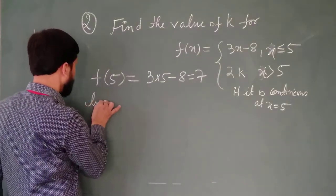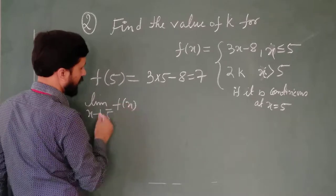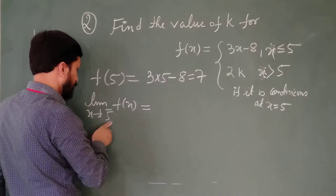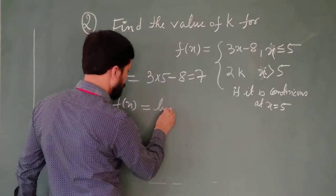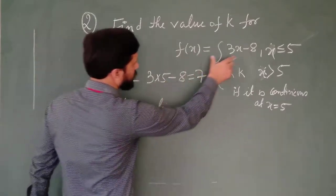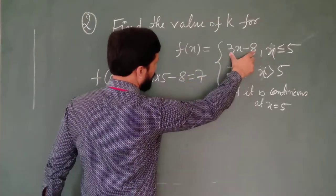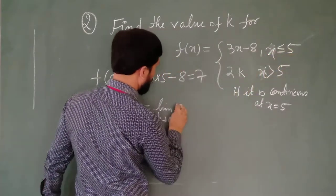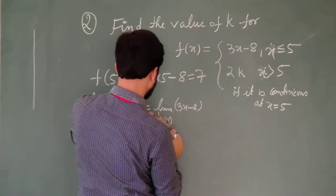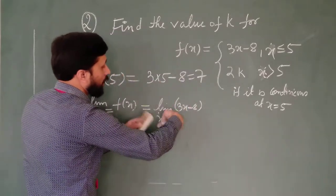Now find the left hand limit: limit x tends to 5 minus, that is the left hand limit of the function f(x). In the next step, we will replace this with h approaches to 0. That is, limit h tends to 0, and in place of f(x) we will write this expression, because f(x) equals 3x minus 8 when x is less than 5.